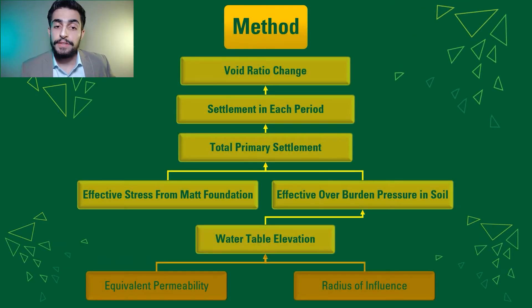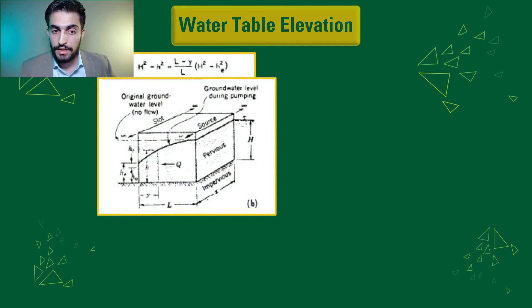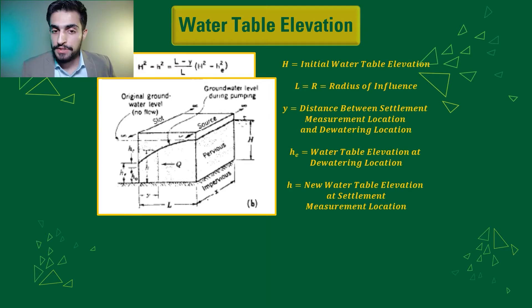Taking the radius of influence information and plugging it in this following equation for finding the water table elevation at the measurement location, where H is again the initial water table elevation. L is the radius of influence this time instead of R. Y is the distance between the settlement measurement location and the dewatering location.